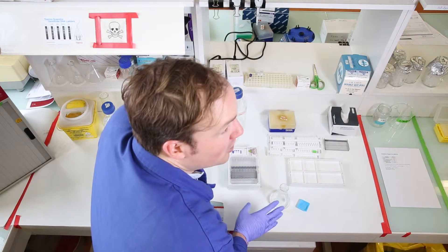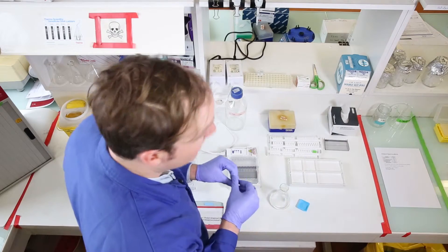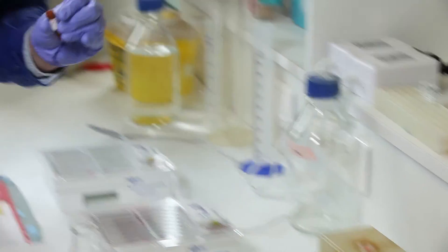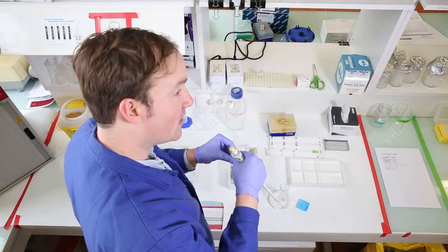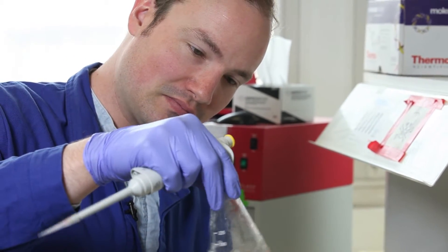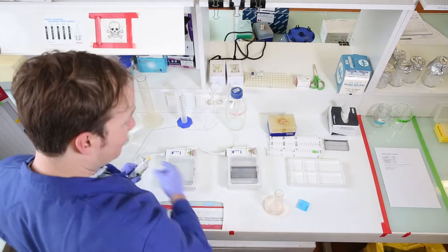Now we'll just leave that on the bench top for a few minutes to cool down until it's cool enough to handle before the next step. We've let our gel cool down a little bit. Next we'll add 5 microliters of DNA stain. This is going to allow us to visualize our DNA bands by making them fluorescent. The gel is prepared.